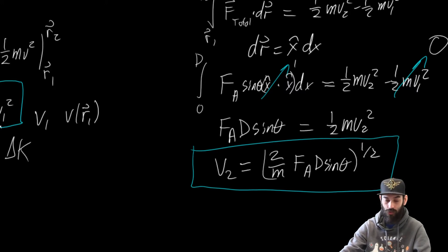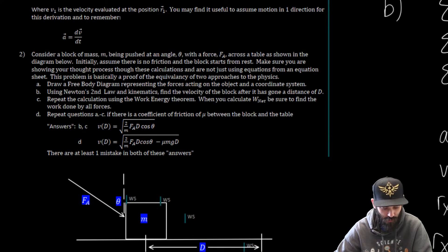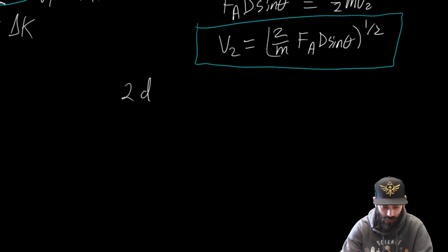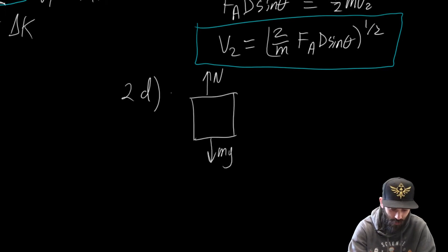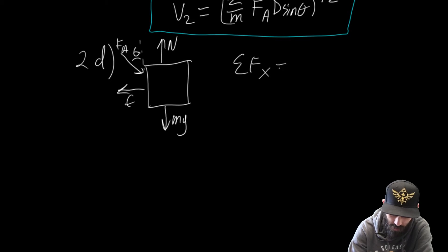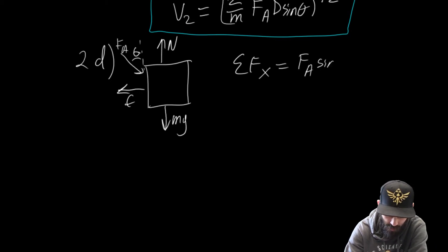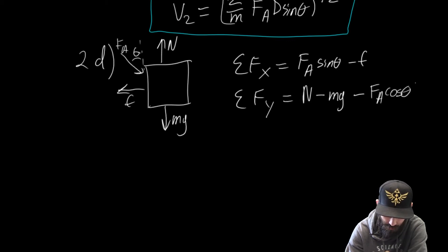Now let's look at how we're going to do Part D. Now it says, let's turn friction on. So we're going to have friction in here as well. Let me draw the free-body diagram again. We have our normal force, gravity mg, a force applied here at angle theta, and now we have friction opposing this motion. Going back to Newton's second law, the sum of the forces in the x direction is going to be equal to F_A times sine of theta minus the force of friction.